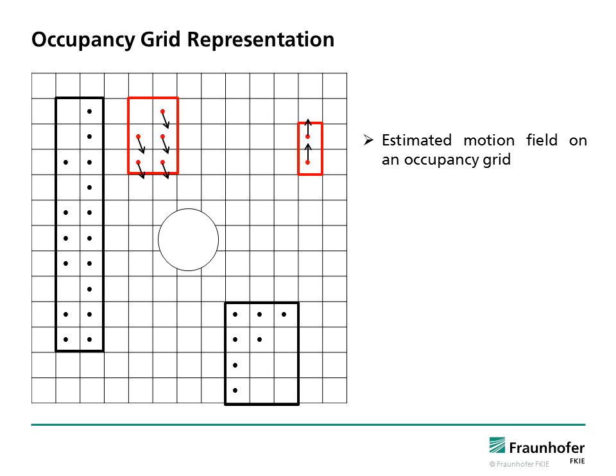This figure shows the estimated motion field of the environment on an occupancy grid. Arrows represent the estimated velocity vectors of grid cells.